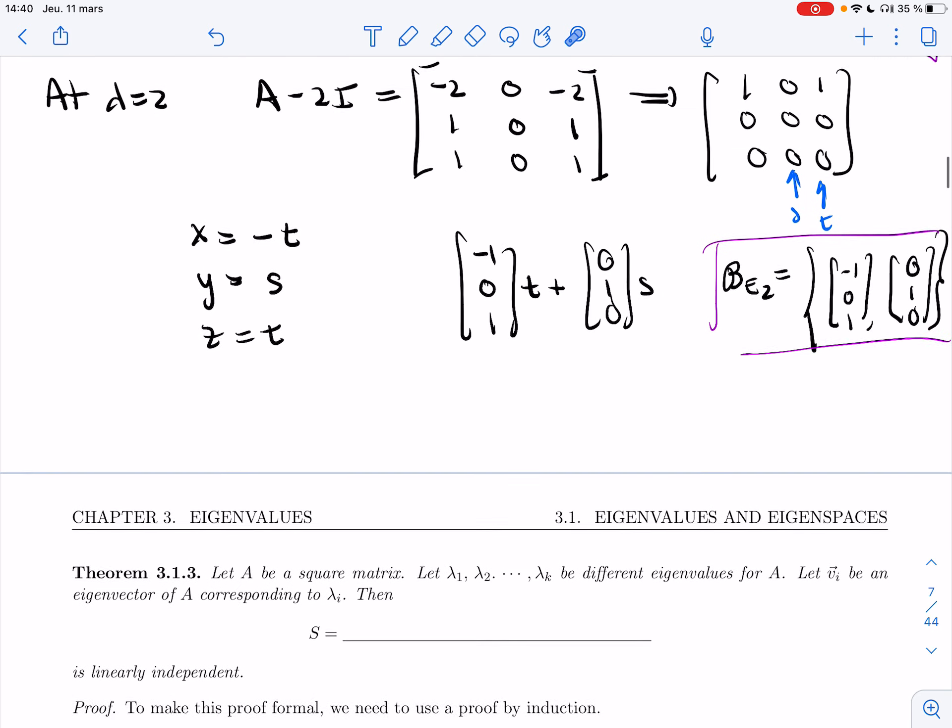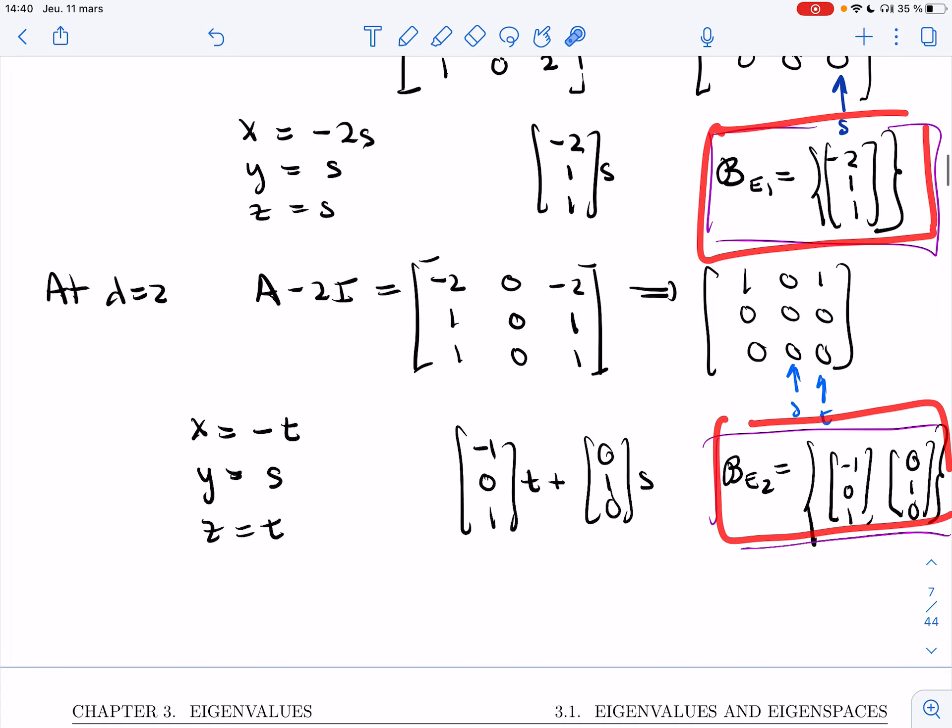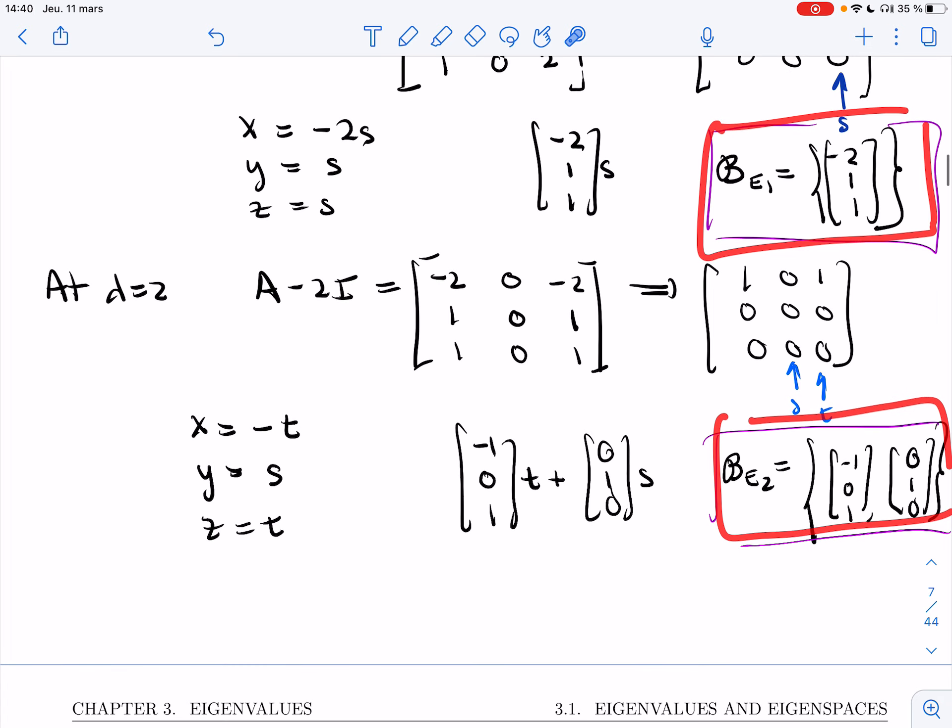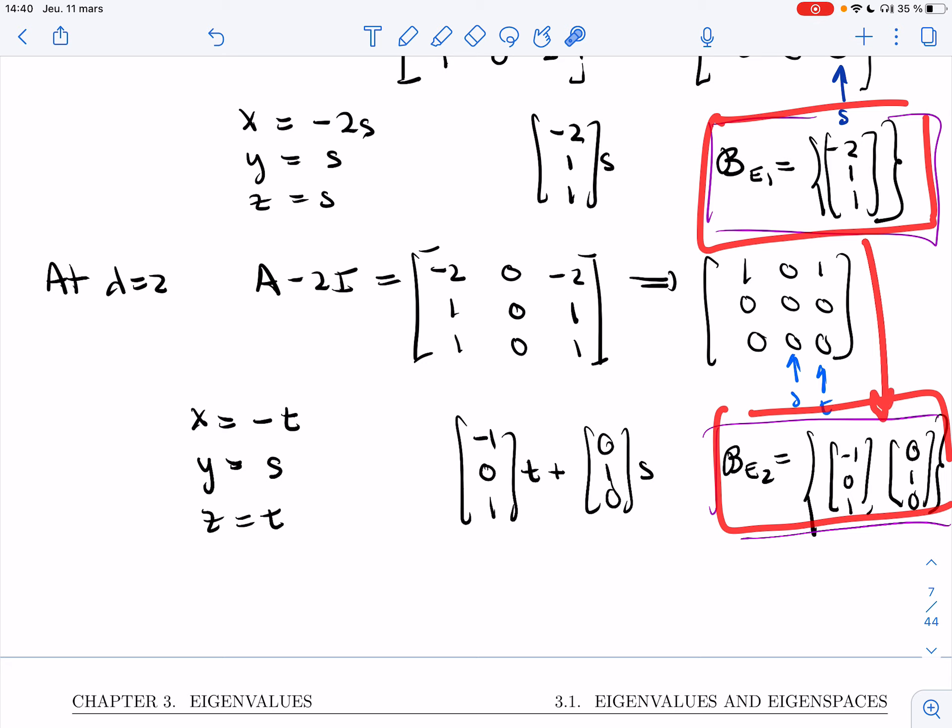In the last example, we found a basis for each eigenspace separately. In future sections, what we will need is one set of eigenvectors that give you a basis for the entire R^n, and so we'd like to put them together.